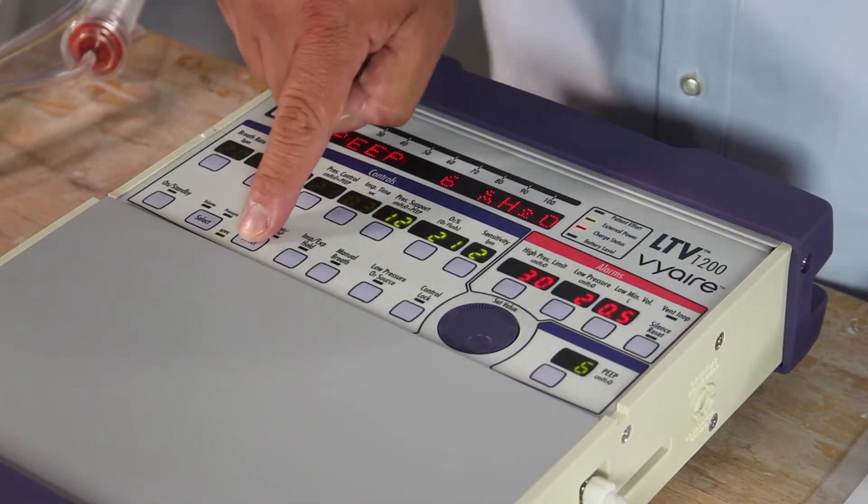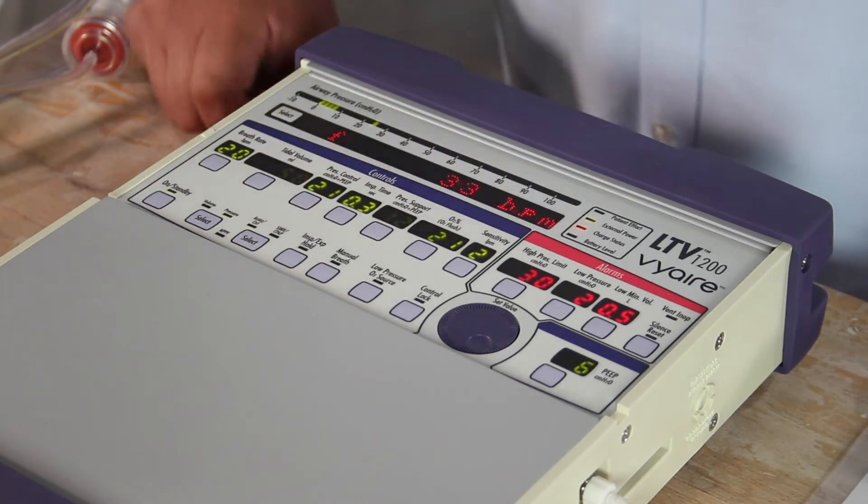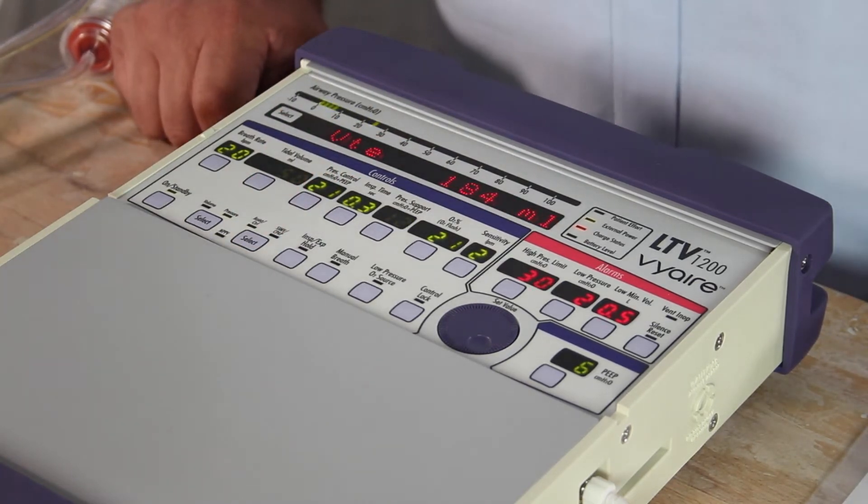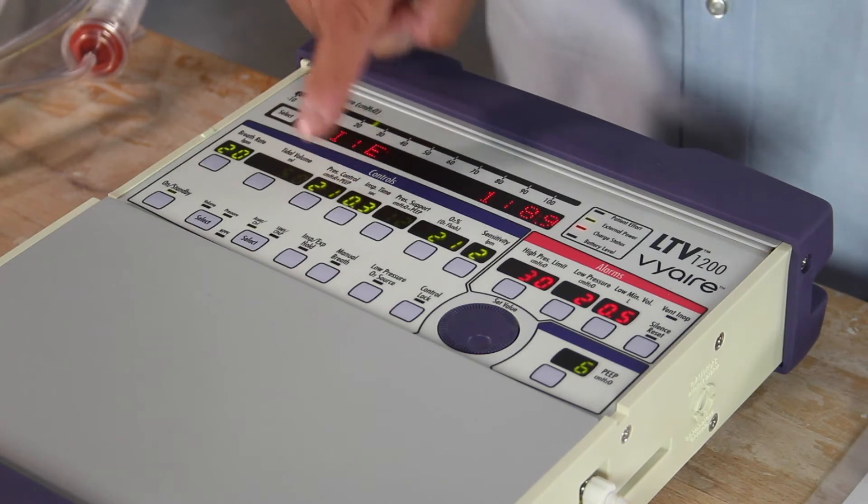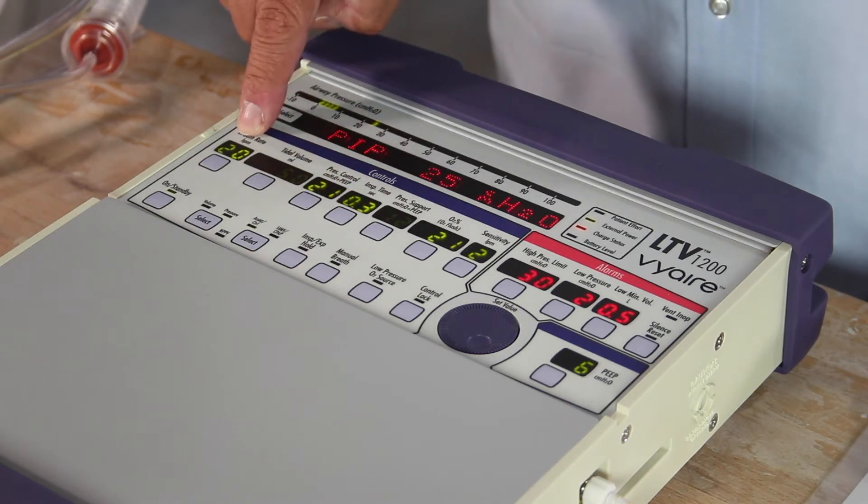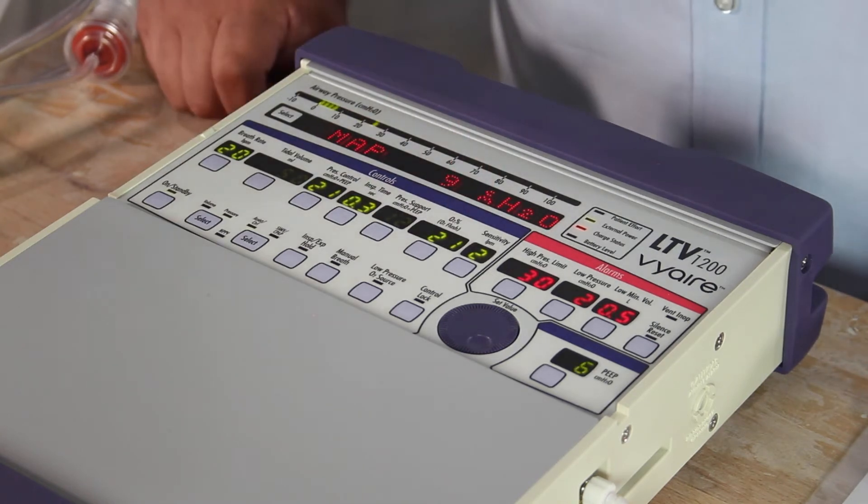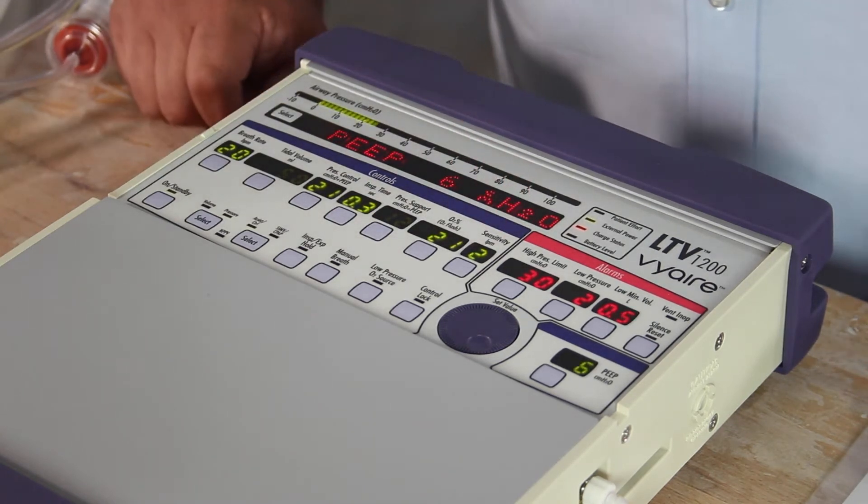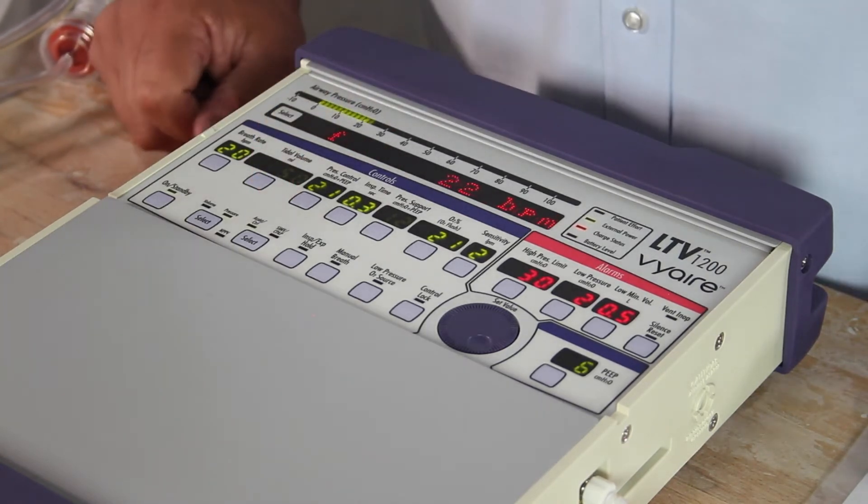We're going to switch out of that. Simply by pressing once, twice to confirm. We're now back in a control or assist control mode of ventilation. You notice we switched off pressure control. We're back in a pressure control mode of ventilation with a breath rate of 20, an I-time of 0.3, FiO2 of 21 percent, sensitivity of 2, so flow triggered.